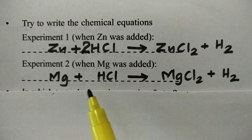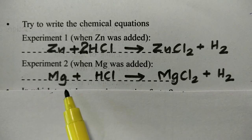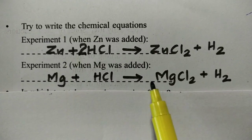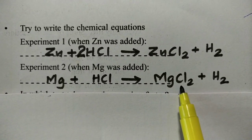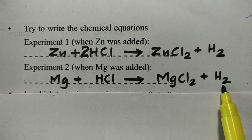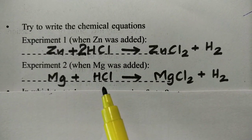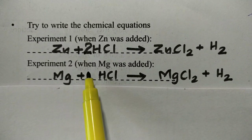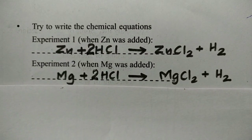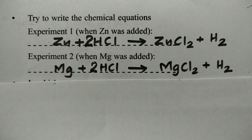If we react magnesium with HCl: Mg + 2HCl → MgCl₂ + H₂. We need to add 2 chlorine to balance the equation. This is how we write and balance the chemical equation.